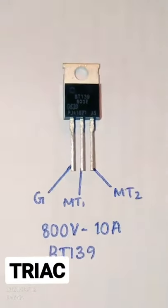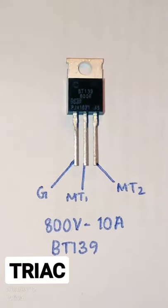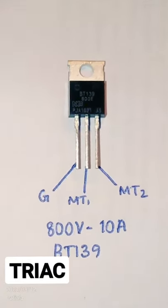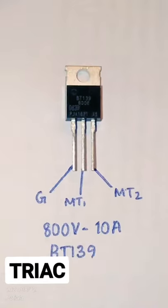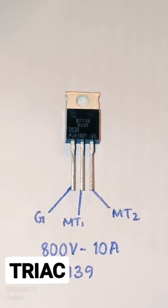This BT-139 is rated 800 volt at 10 ampere maximum. And as you can see, the pinouts are as follows. This TRIAC comes in a TO-220 AB casing.